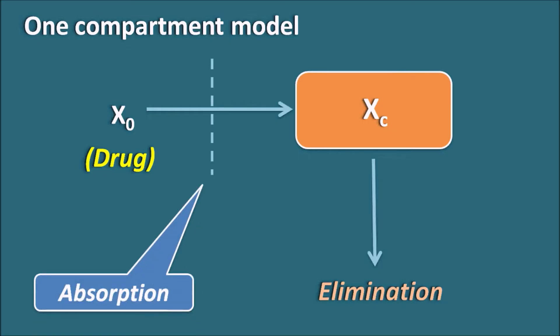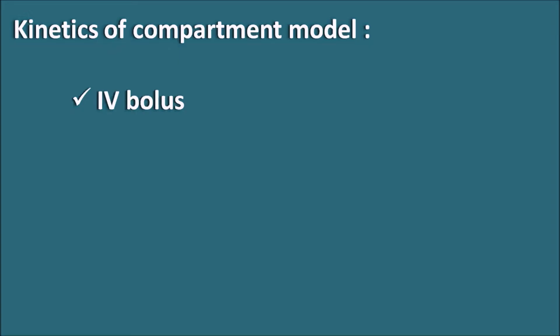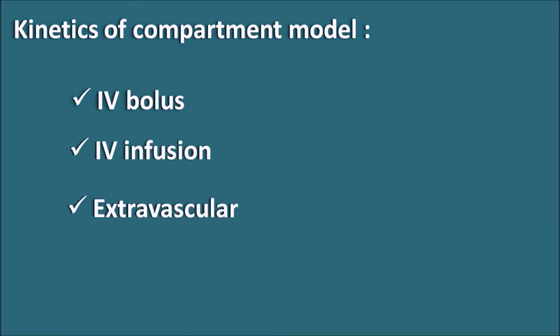The presence of the absorption phase depends on the route of administration of the drug. If the drug is given by IV route, the absorption phase is not present. But if it is given by the extravascular route, we can observe the absorption phase. The kinetics of the compartment model can be discussed in three categories based on the route of administration: IV bolus administration, IV infusion, or extravascular administration.